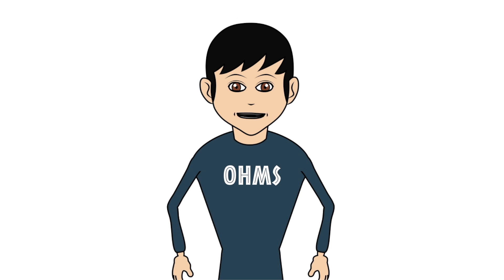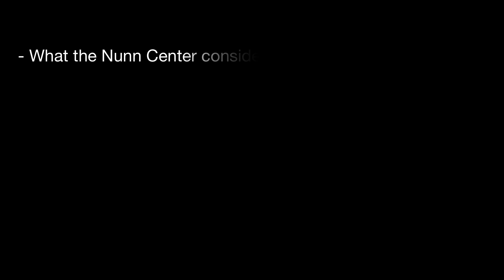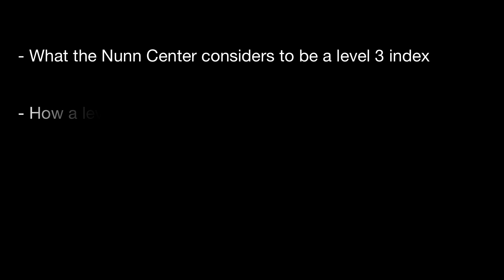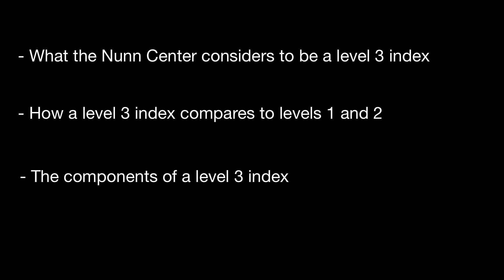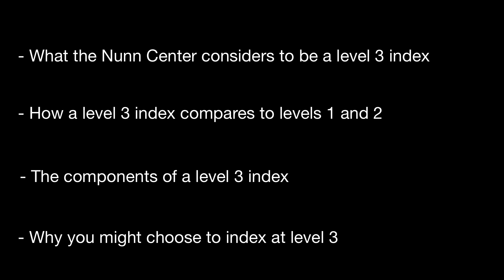Currently we have three levels of OHMS indexing, beginning at level 1 and increasing in content and detail to level 3. By viewing this video you will learn what the Nunn Center considers to be a level 3 index, how it compares to a level 1 or 2 index, what the components of a level 3 index are, and why you might choose to index an interview at level 3.